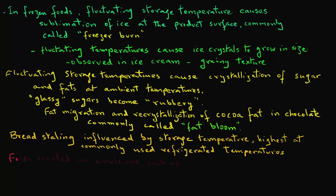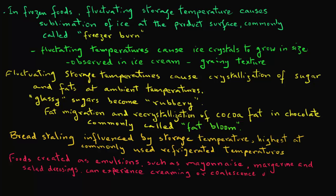Foods created as emulsions, such as mayonnaise, margarine, and salad dressings, can experience creaming or coalescence of droplets — defects that lead to unacceptability of these products. Since emulsions are thermodynamically unstable, improper dispersion of phases at preparation or mishandling with extremes of temperature or vibration can cause product degradation. This has been an overview of some of the physical changes that result in spoilage of foods.